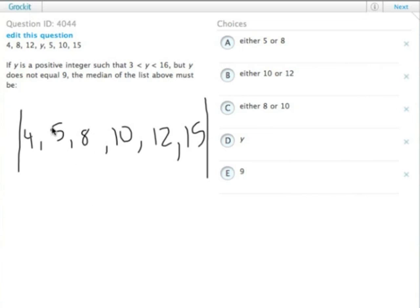And we know that y does not equal 9. So the median in the list, if y is not in here, the median is right between these two numbers. So the median equals 9 no matter what. The median of the set equals 9 without y in it.